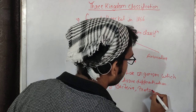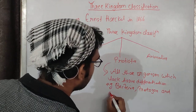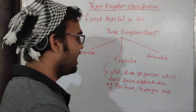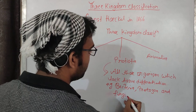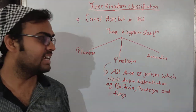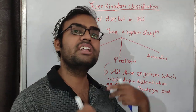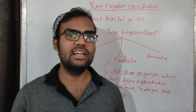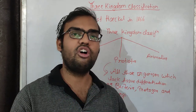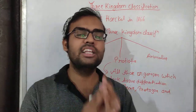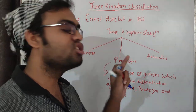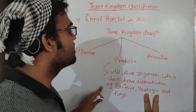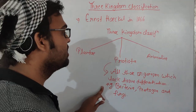He placed organisms like bacteria, protozoans, and fungi in the Protista group. What is meant by tissue differentiation? Normally bacteria and protozoans don't have the capability to differentiate tissue. In humans, tissue forms organs, organs form organ systems, and then the whole organism is formed. But that type of tissue differentiation is not seen in bacteria and protozoans. So on the basis of this criteria, Haeckel introduced the kingdom Protista for organisms which lack tissue differentiation.